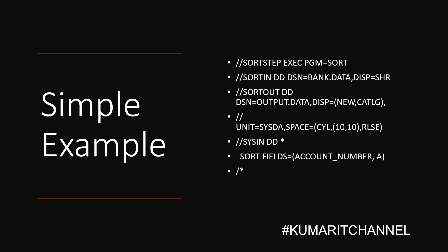Let me get started with a very simple example connected to a banking project. The different code that you are seeing is a simple sort card, with the EXEC statement, renamed as the program start. You can see the input data set named bank.data, and then the output data set which will be the result data set, where it is sorting the account number in ascending order. In a banking project, there may be a large amount of data that needs to be sorted in a specific order to be useful, and that is where we use this sort card.